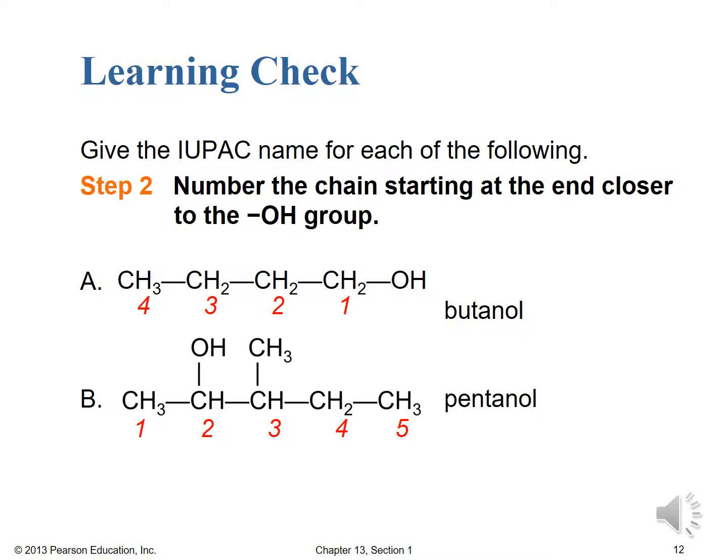Moving to step two, numbering the chains: for the butanol, we number right to left because the OH group is at the far right end, making it carbon 1. For structure B, we number left to right, and we can place the hydroxyl group on carbon 2 — we can't get it lower than that since it's not on the terminal carbon.